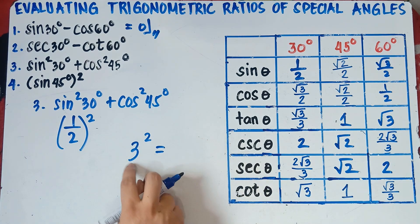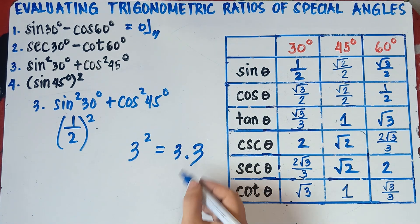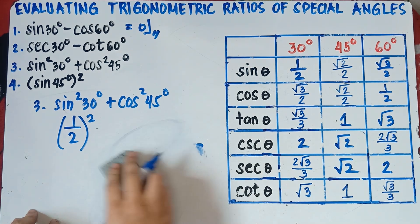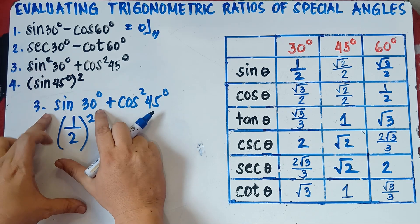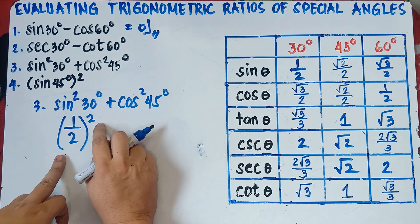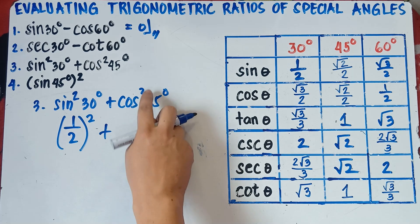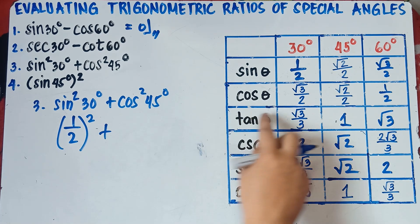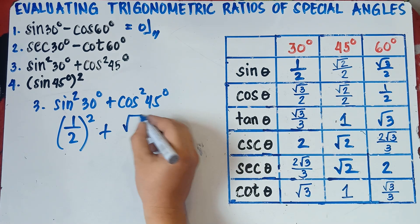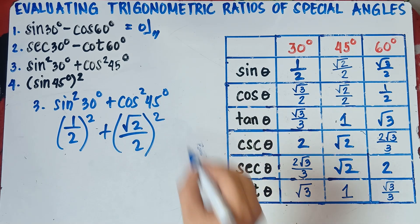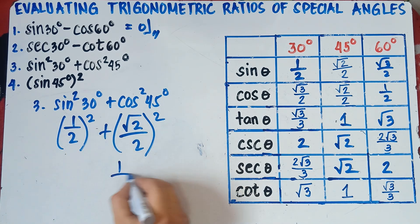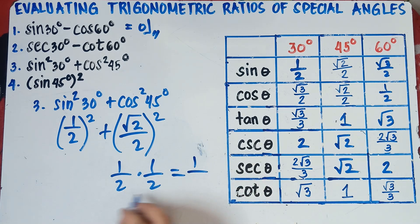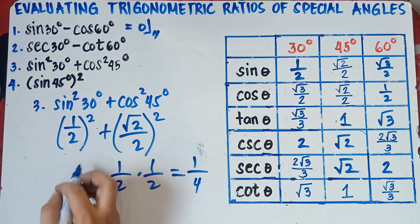So sine squared 30 degrees means (1/2) squared. Cosine 45 degrees is √2 over 2, and we also need to square that. So (1/2)² = 1/2 times 1/2: 1 times 1 is 1, and 2 times 2 is 4, giving us 1/4. For (√2/2)², we multiply √2/2 times √2/2: √2 times √2 is √4, and 2 times 2 is 4, giving √4 over 4.